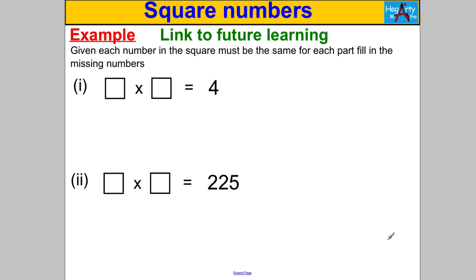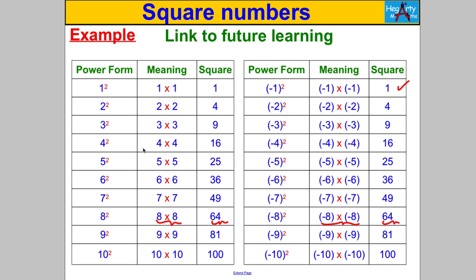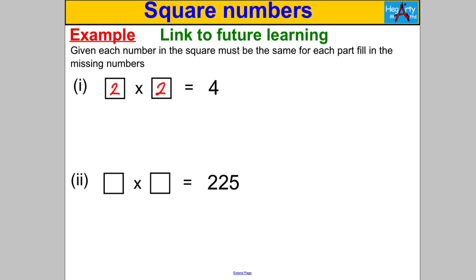Given each number in the square must be the same for each part, fill in the missing numbers. A lot of students say 2 must go here and 2 must go there, but what also could go there? Negative 2, couldn't it? Negative 2 multiplied by negative 2 would also give us positive 4, so never forget that as a potential answer. 2 multiplied by 2 is 4, but negative 2 multiplied by negative 2 also gives positive 4. So what numbers could be here? Hopefully you said 15 multiplied by 15, but did you also say negative 15 multiplied by negative 15? That's something I'm going to rely on later when talking about taking square roots. That's it for this video, everything you need on square numbers. Thanks for watching.